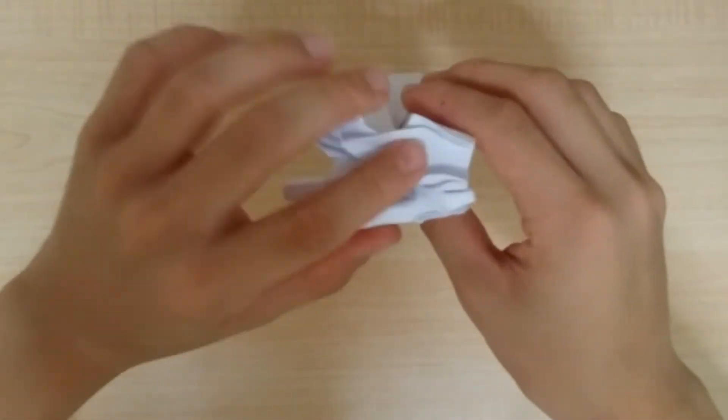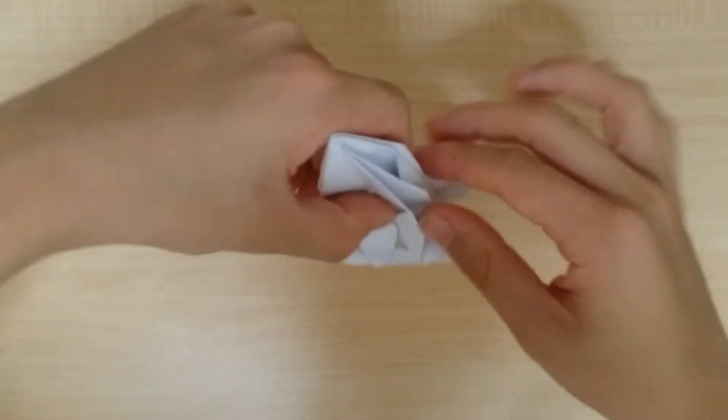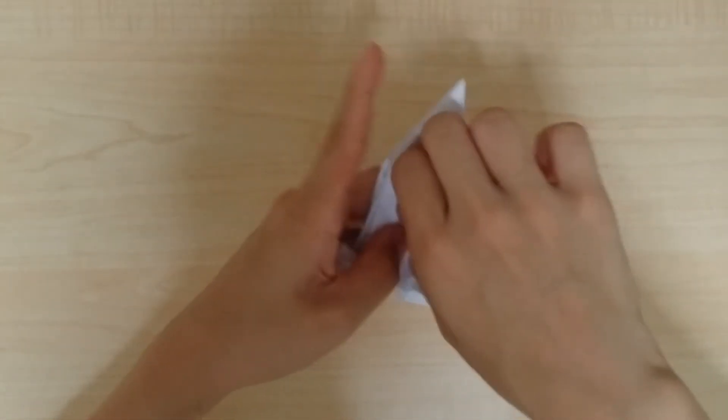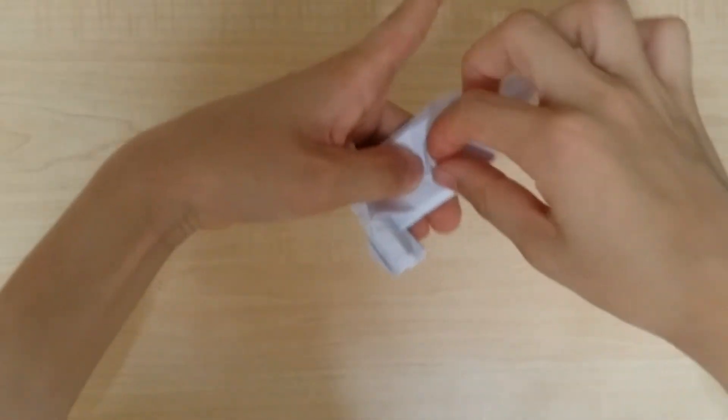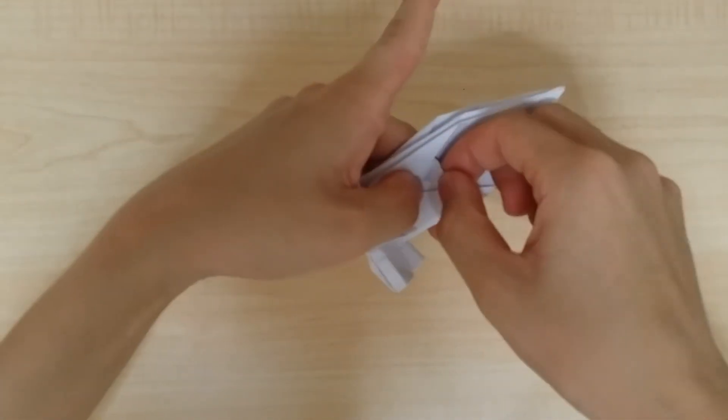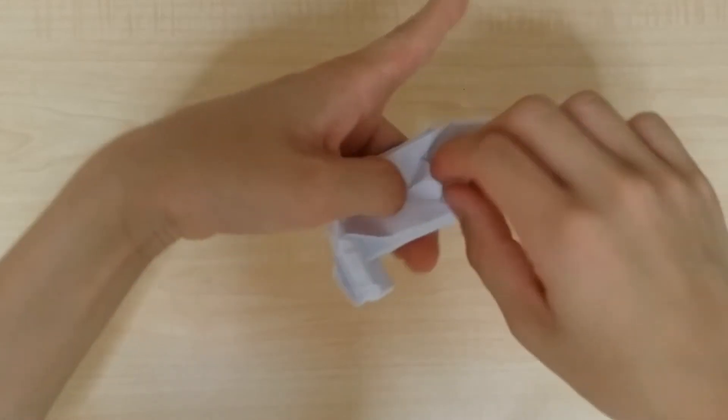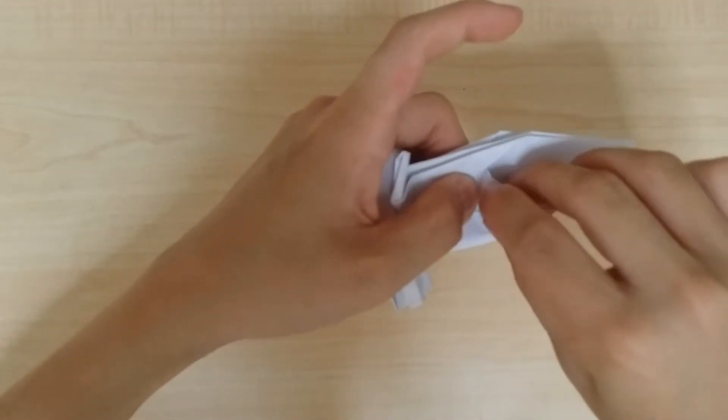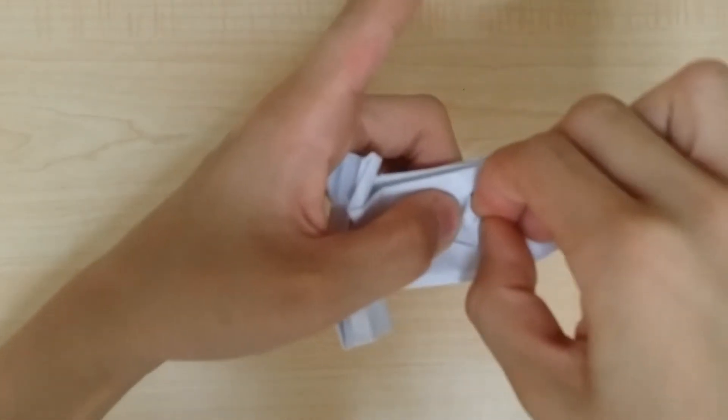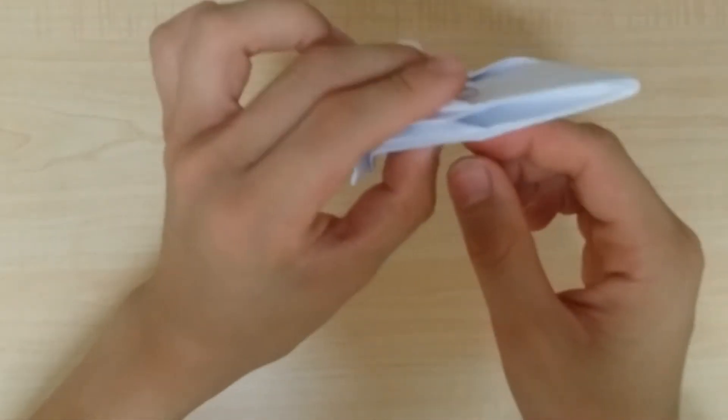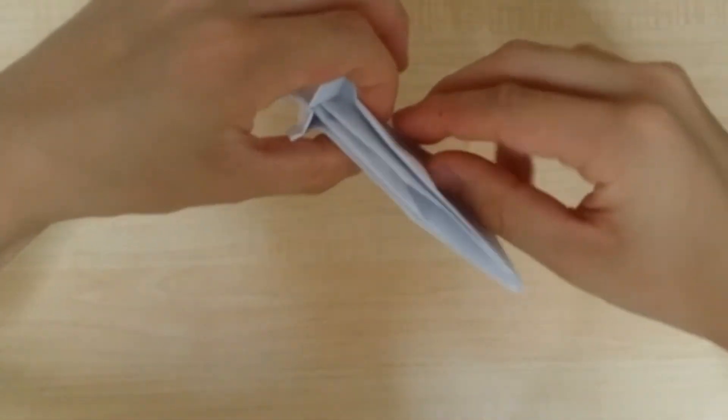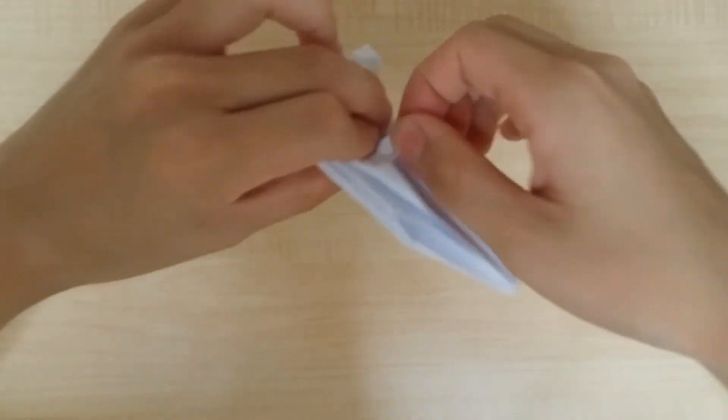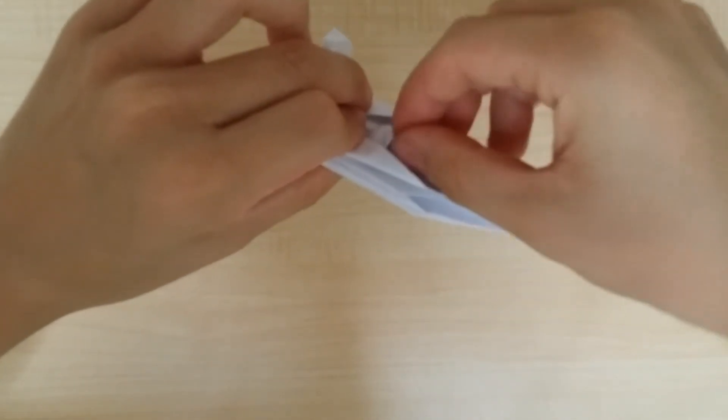The back edge will be a bit messy but it's okay. So next what you want to do is this part here - fold it up, then pinch it like that, then reverse fold the tip to make a tip. To show you again, take this, pinch it, then reverse fold it.